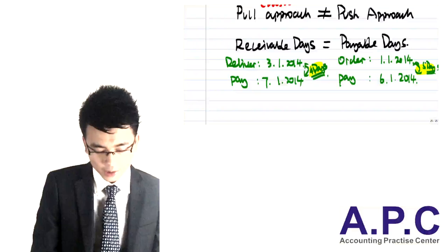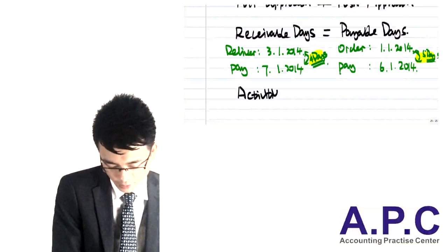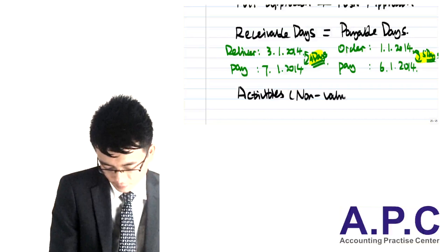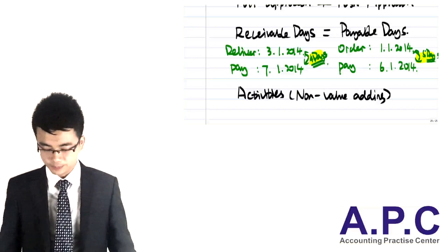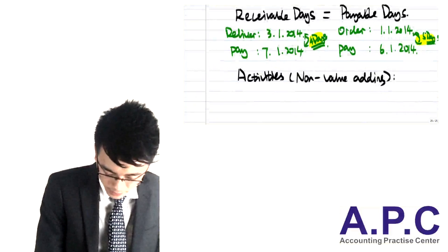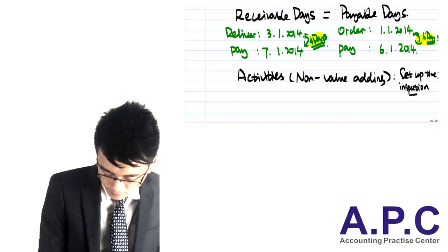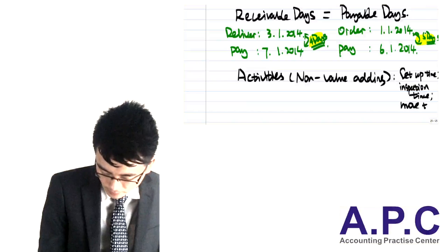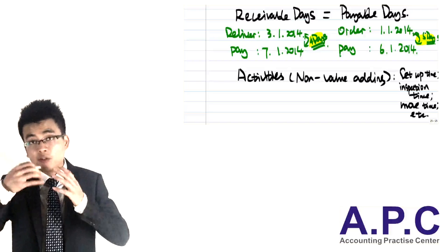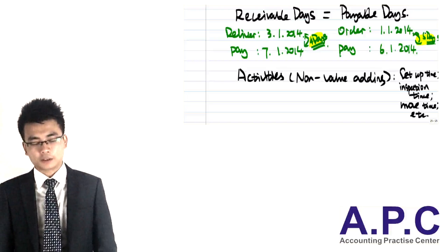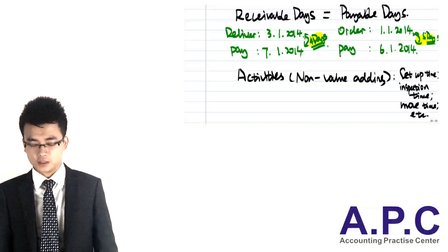A stands for any activities that are non-value adding — of course, we need to eliminate those activities. For example, set-up times, inspection time, move time, and so on. Waiting for something to happen but doing nothing about it — those are non-value adding activities. What we're trying to do is minimise or decrease them to a certain acceptable level.